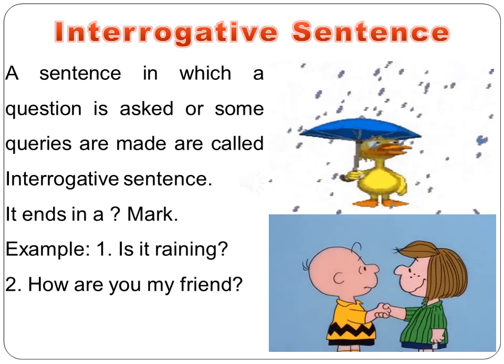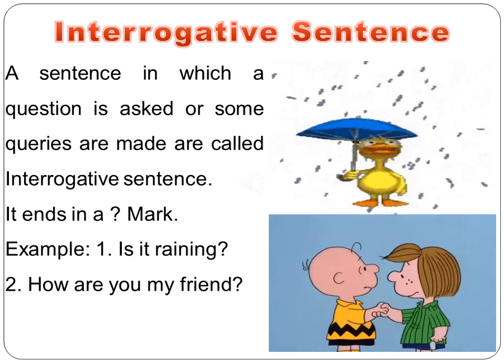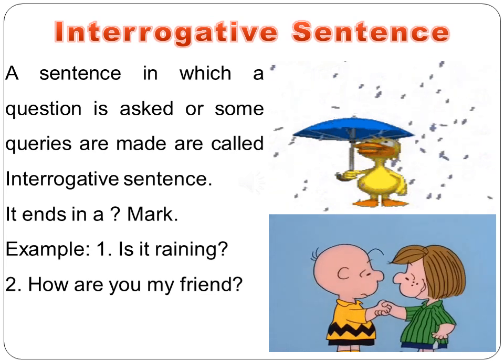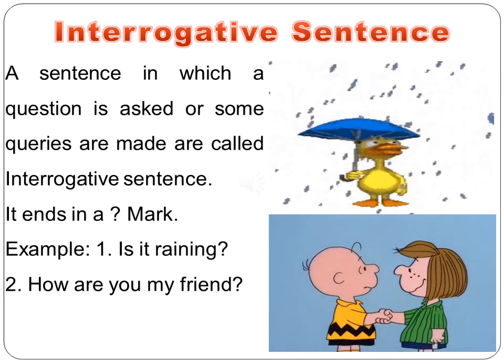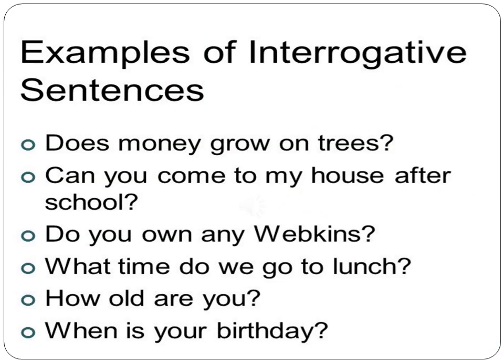Interrogative sentence: A sentence in which a question is asked or some queries are made is called an interrogative sentence. It ends in a question mark. Example: 'Is it raining?' 'How are you, my friend?' Further examples of interrogative sentences: 'Does money grow on trees?' 'Can you come to my house after school?' 'Do you know any web links?' 'What time do we go to lunch?' 'How old are you?' 'When is your birthday?'